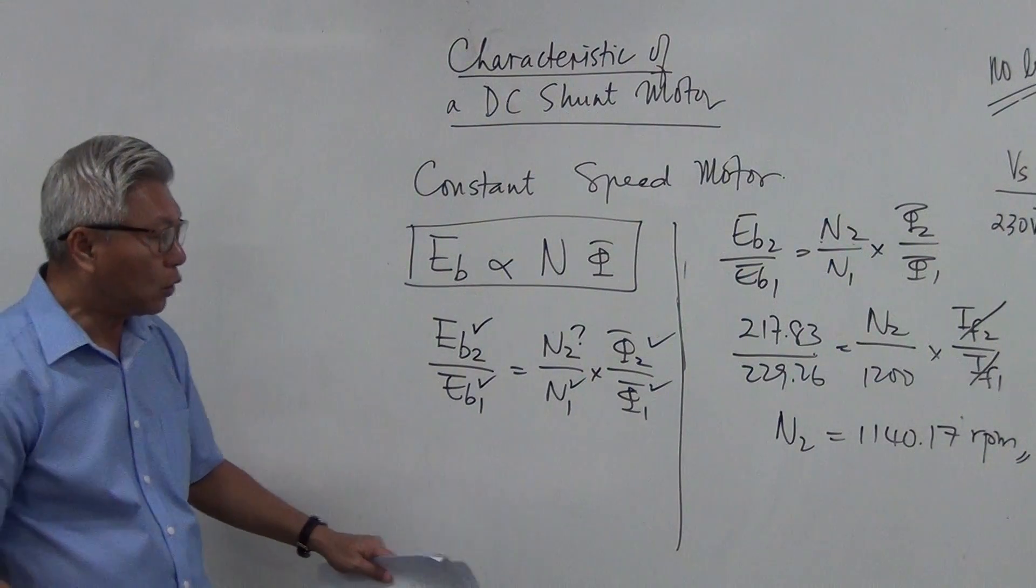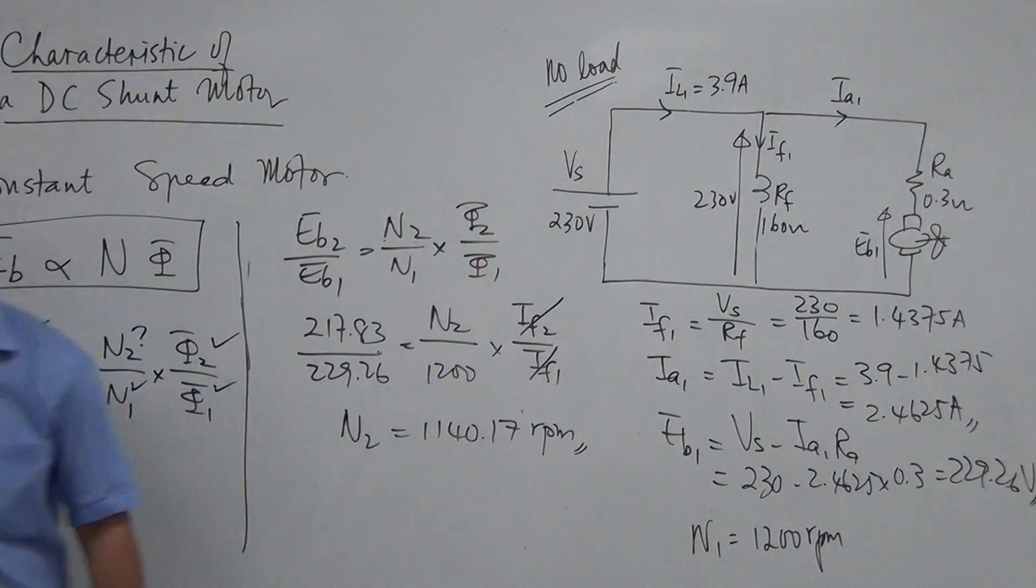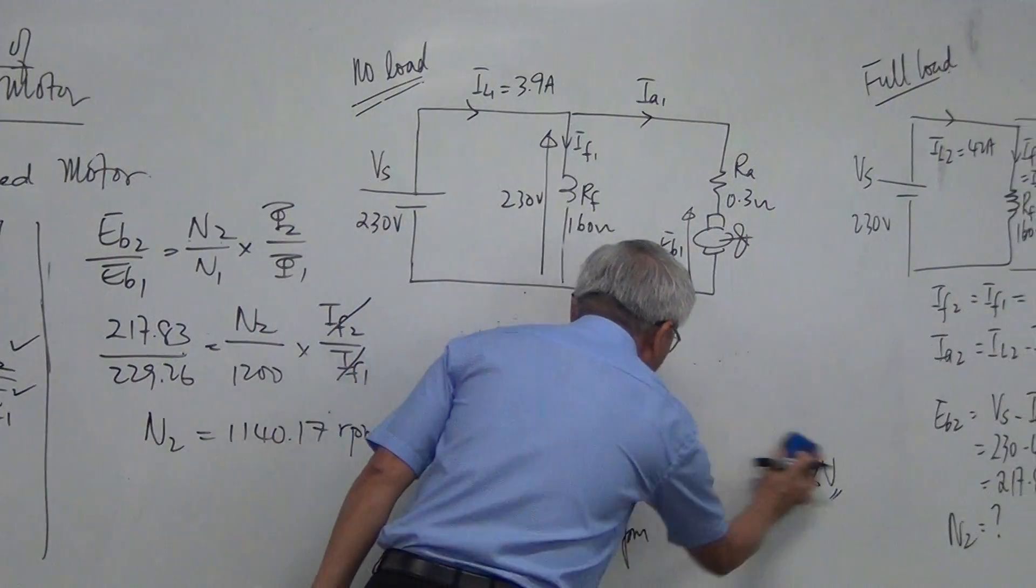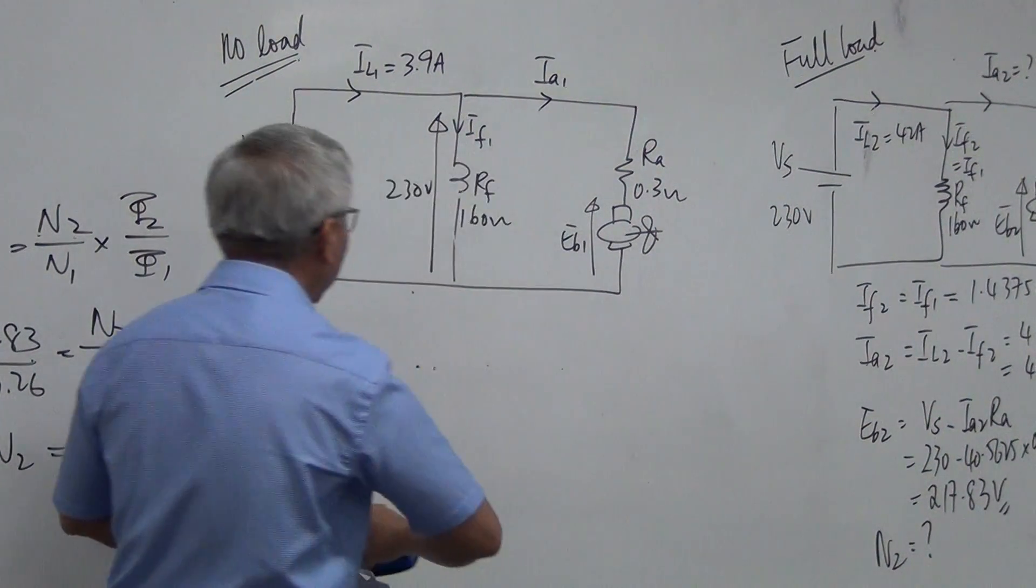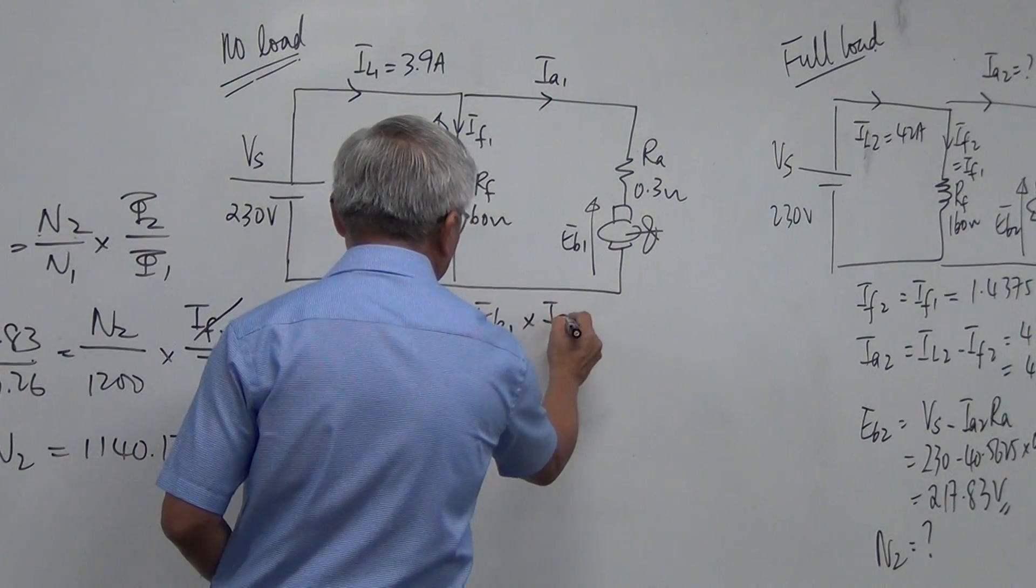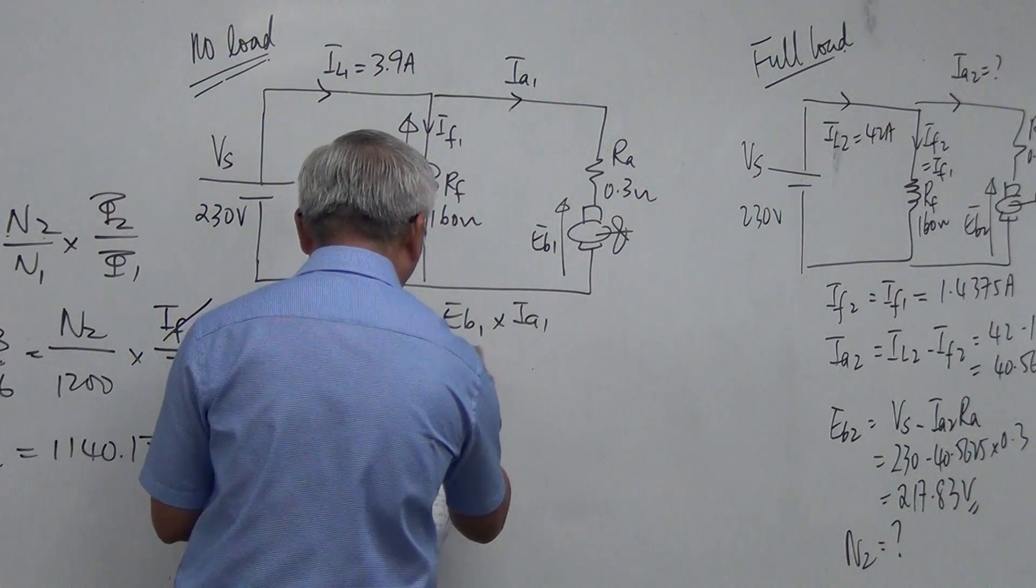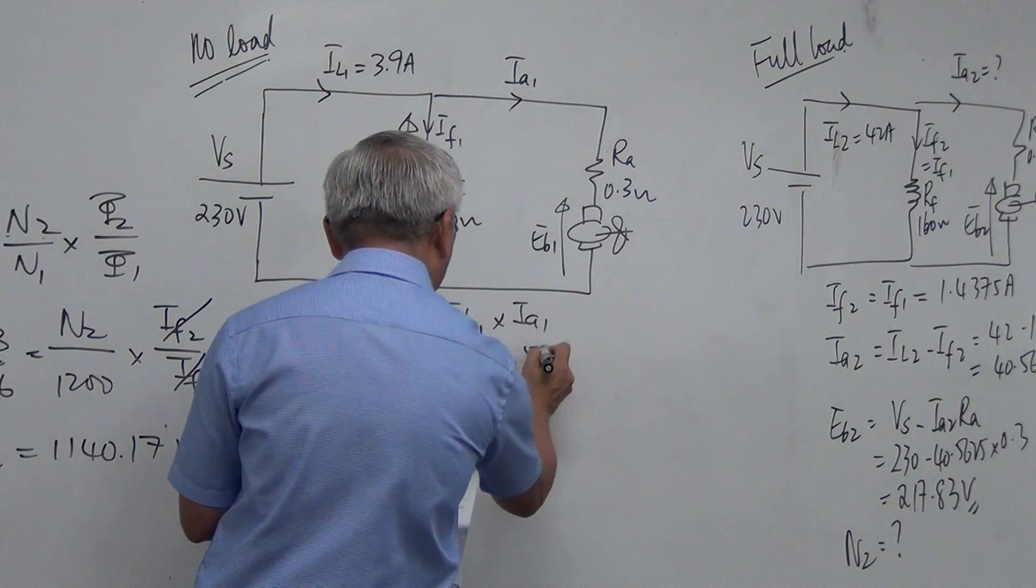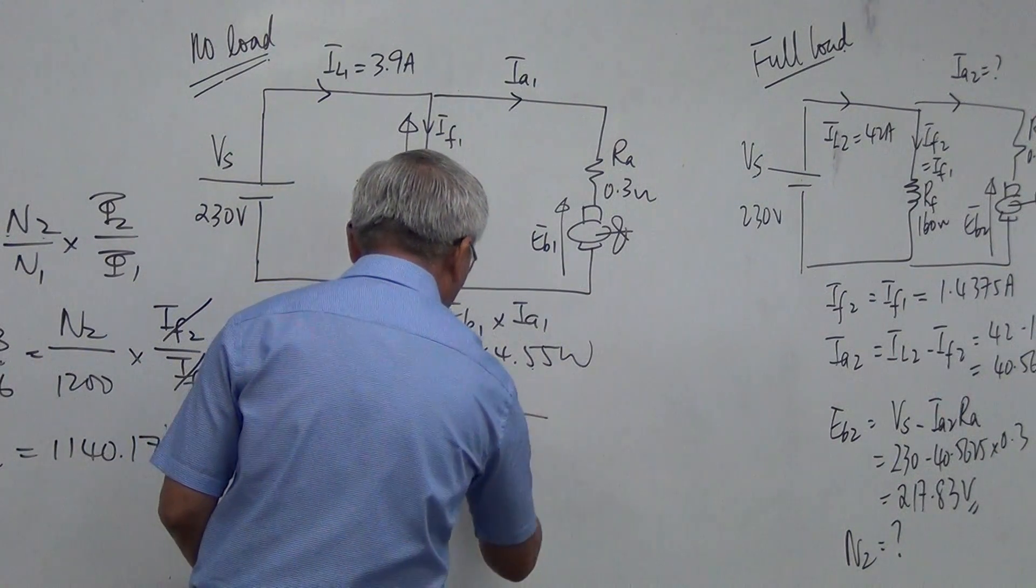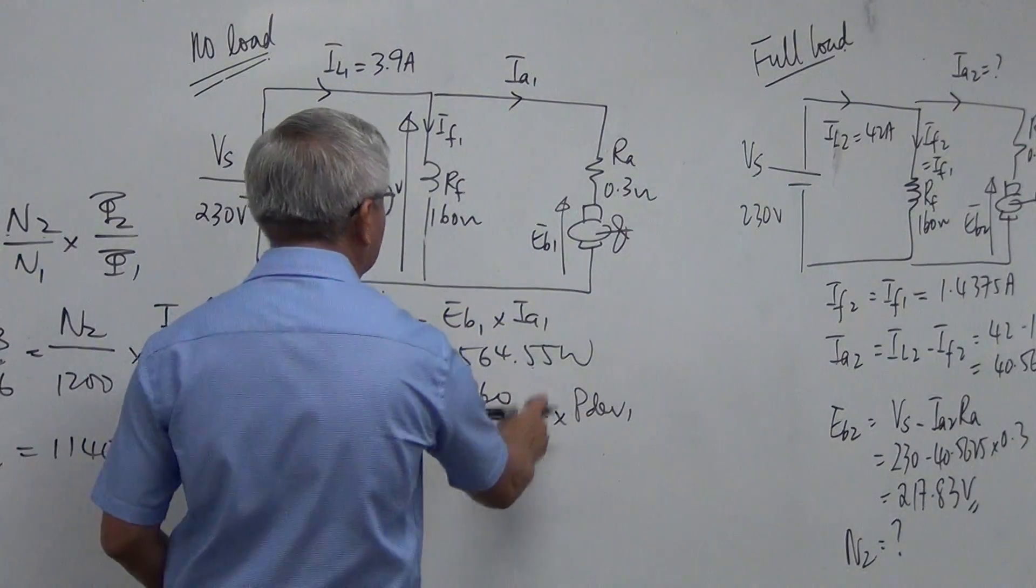For interest sake, we could actually go on to calculate the torque. If you still remember the equation about the torque. Torque is equal to 60 over 2 pi N multiplied by power developed. So first of all, I need to calculate the power developed. Which is equal to Eb1 times Ia1. And I've already done my sum. And that is equal to 564.551. And then I calculate the torque using 60 over 2 pi N multiplied power developed. And the N of course is 1200.